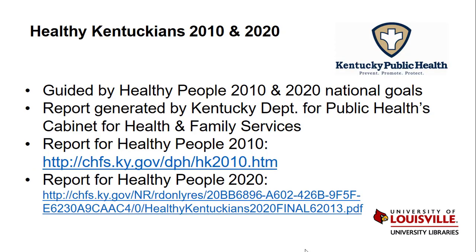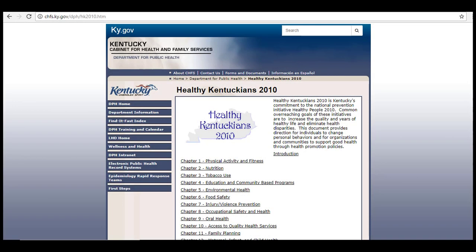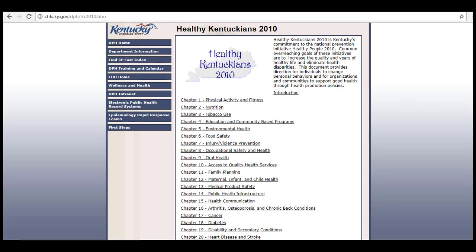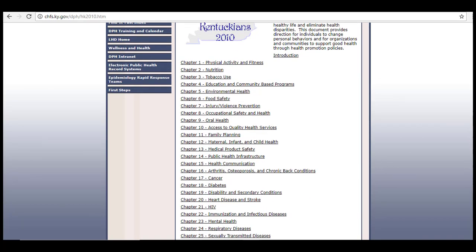Healthy Kentuckians 2010 and 2020 are related to Healthy People 2020. They are the local equivalent of the national program we just discussed and are guided by the Healthy People goals and objectives. Both reports were generated by the Kentucky Department for Public Health's Cabinet for Health and Family Services. To access them, it is easiest to use the links provided in the description section of this YouTube page, or to simply Google Healthy Kentuckians 2010 and Healthy Kentuckians 2020. Both reports are very simple to navigate — they are collections of links, broken down by chapter, covering each topic under their initiative.